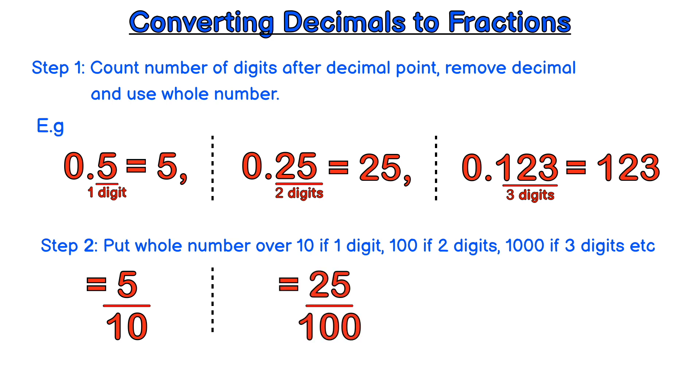Likewise, with 0.123, we have three digits after the decimal point. So it becomes 123 over 1000.